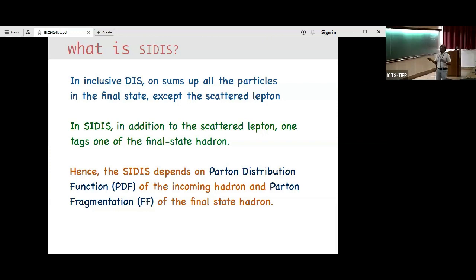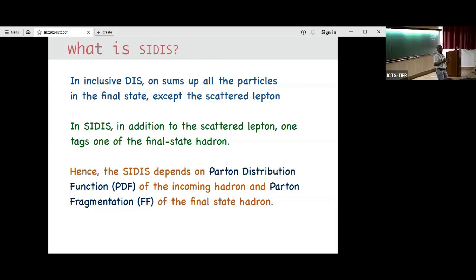Namely, it contains, in addition to PDFs, information about fragmentation functions. And EIC or COMPASS or whatever — these machines are capable of actually extracting these fragmentation functions.